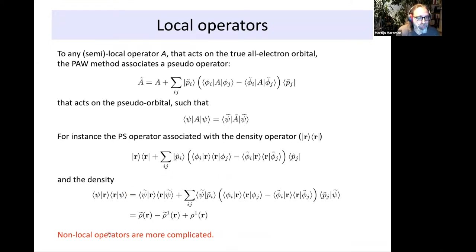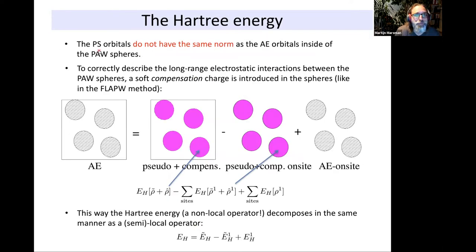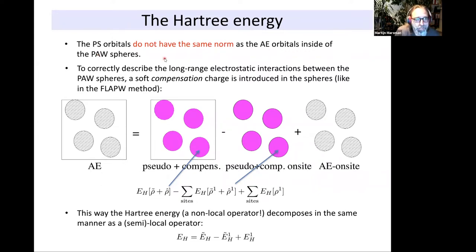Non-local operators are more complicated. The pseudo-partial waves do not have the same norm as the all-electron partial waves inside the PAW spheres. The same also goes for the pseudo-orbital on the plane wave grid — it does not have the correct norm. It's not a norm-conserving method, the PAW method.